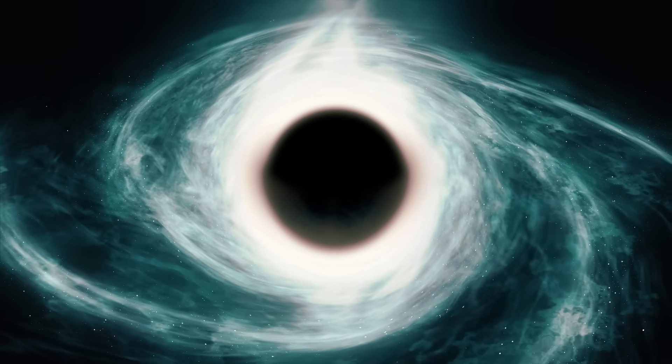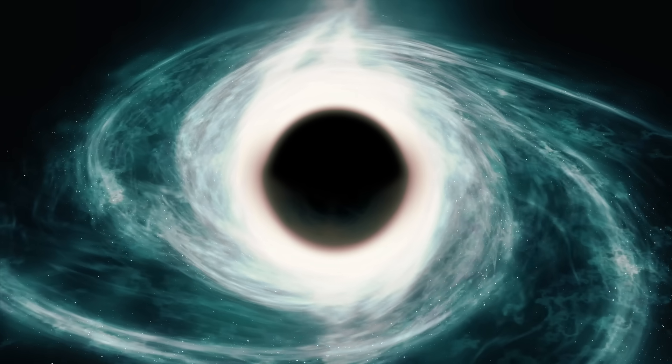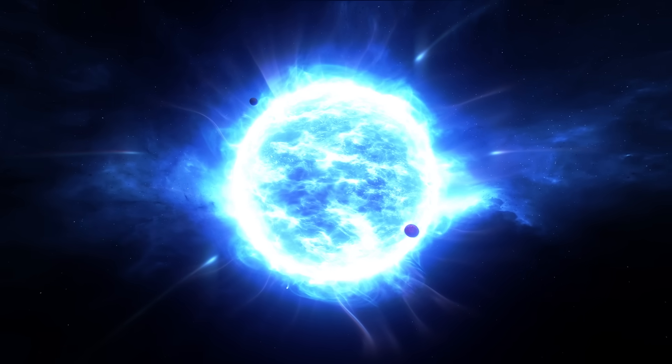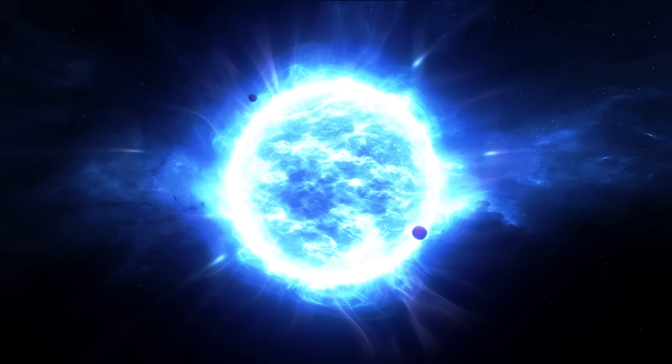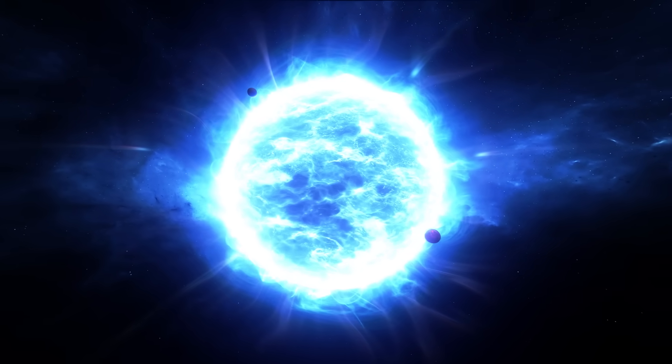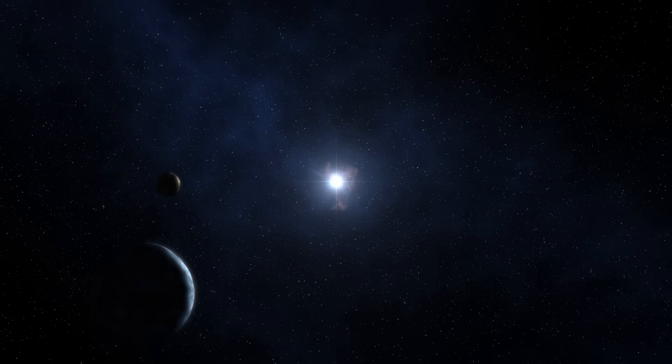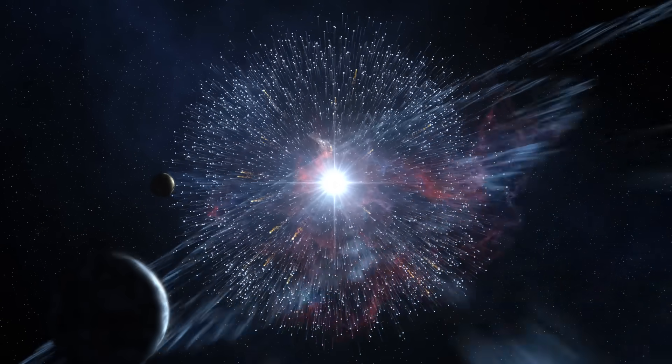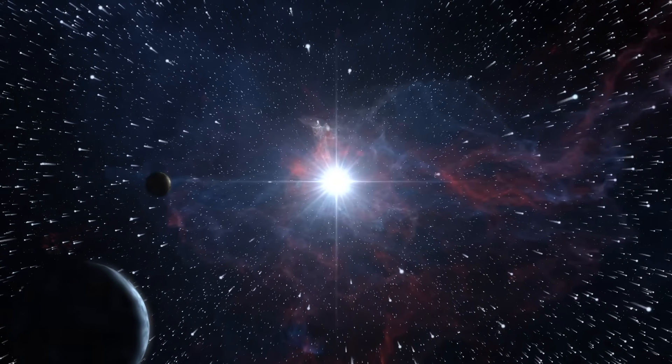Black holes are intricate space phenomena. Everything about them is complicated. When a large star, about 10 to 20 times more massive than the sun, exhausts all of its fuel, the balance between gravity and pressure breaks down, and the star collapses in on itself and goes supernova.